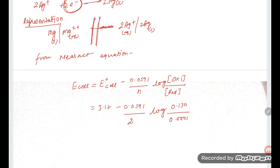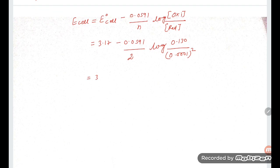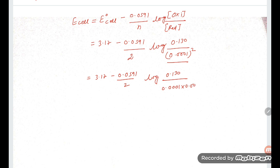So we have: 3.17 − (0.0591 / 2) × log(0.130 / (0.001)²). Now 0.001 × 0.001 = 10⁻⁶, giving: 3.17 − (0.0591 / 2) × log(0.130 / 10⁻⁸), since (10⁻³)² = 10⁻⁶ and the denominator becomes 10⁻⁸ when combining.